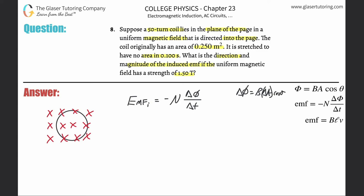So what we're going to do is: emf induced equals negative N. Let's plug that in, so it's B times the change in area multiplied by the cosine of that angle, divided by the change in time.